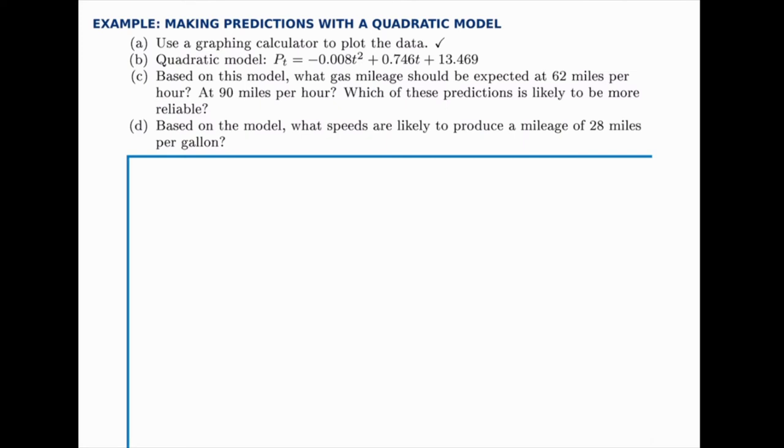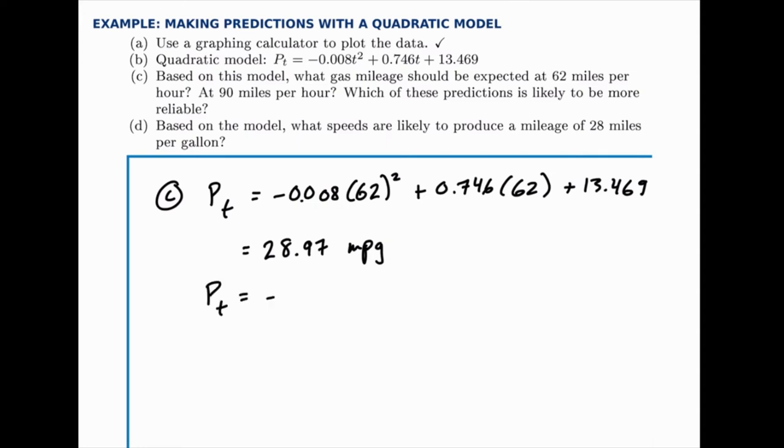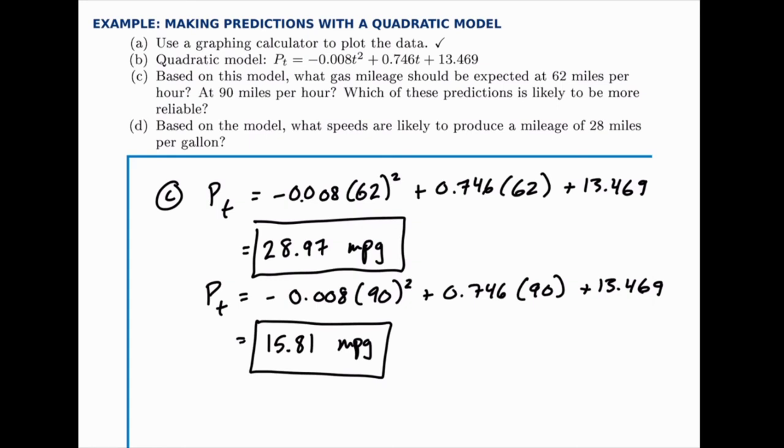We're given the values for the speed - for x or for t in our case - and then we're gonna make predictions about the gas mileage, the output, P_t in our case. Which means we just need to plug in 62 and 90 into our model. For the first one we'll plug in 62 and we get an answer of about 29 miles per gallon. For the second one we plug in 90 and we get about 16 miles per gallon.